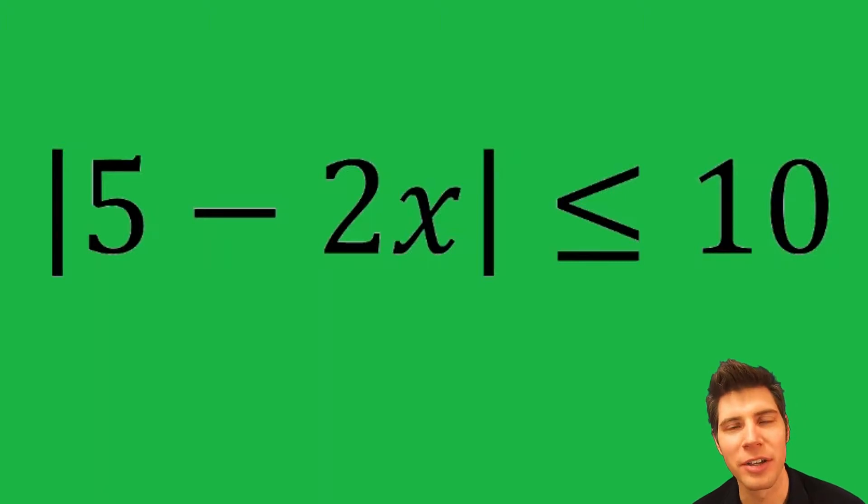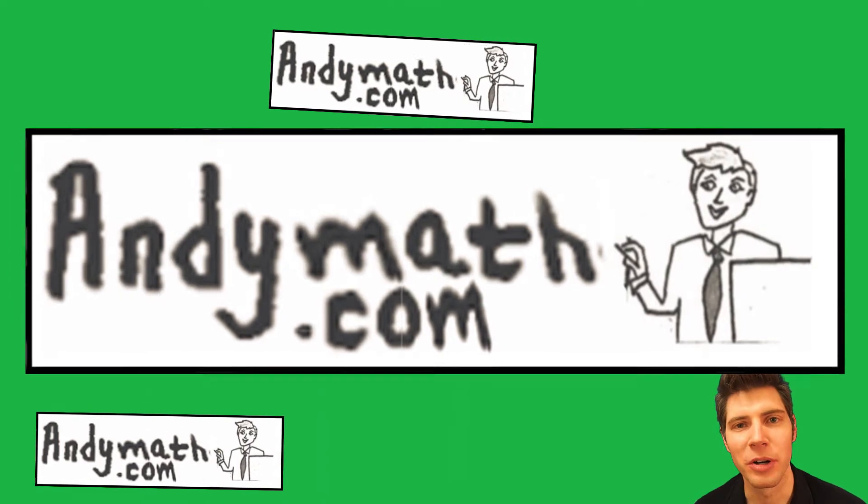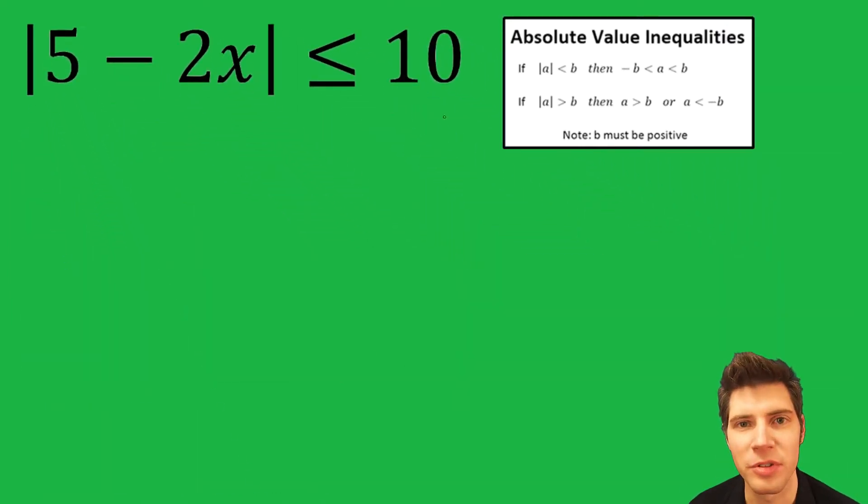Hey guys, welcome to this absolute value inequality problem. So we're going to solve this. First, let's look at the notes. These are the notes for the absolute value inequality problems. If the absolute value is on the left side, it's less than some number, then you do this to it.